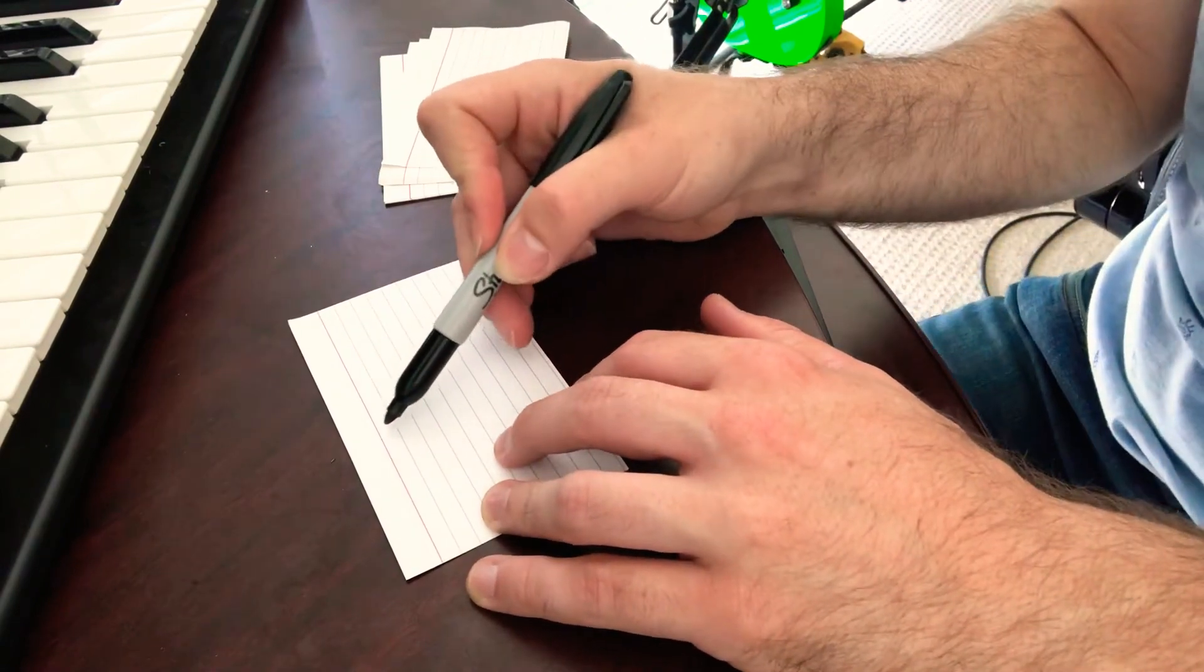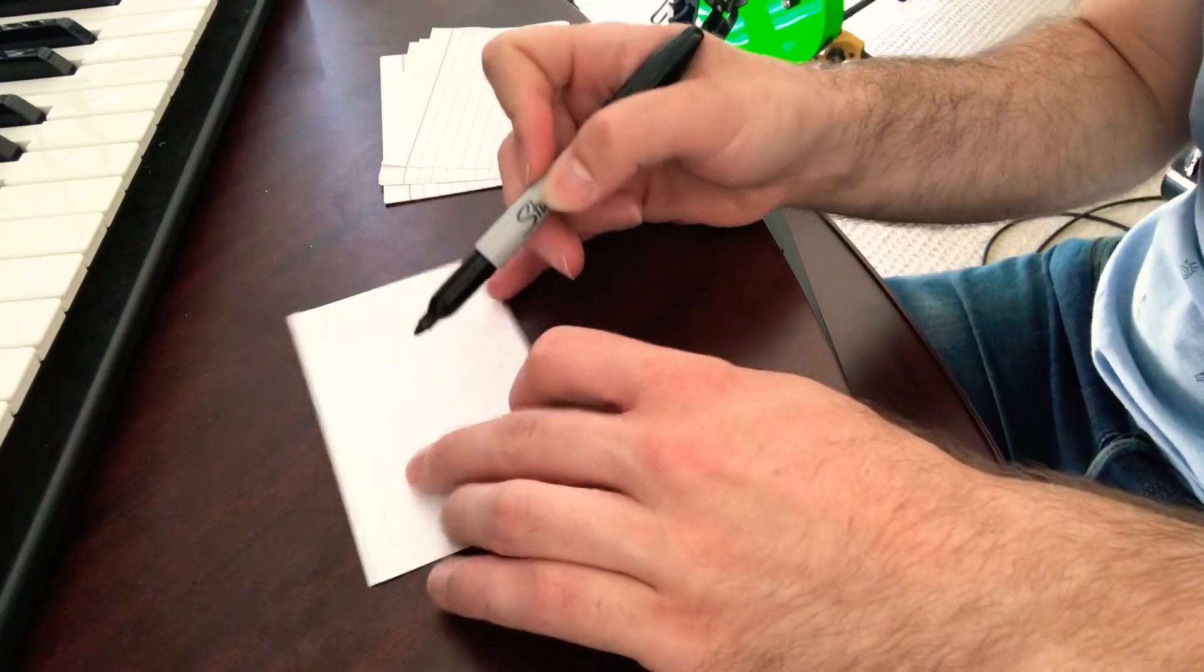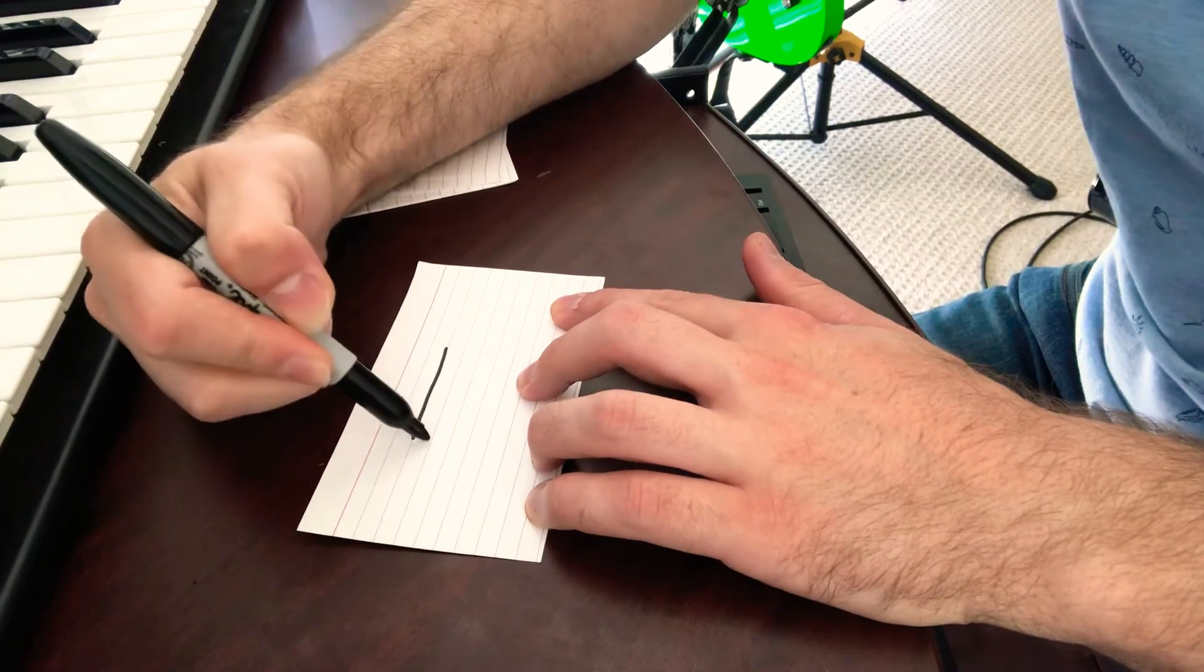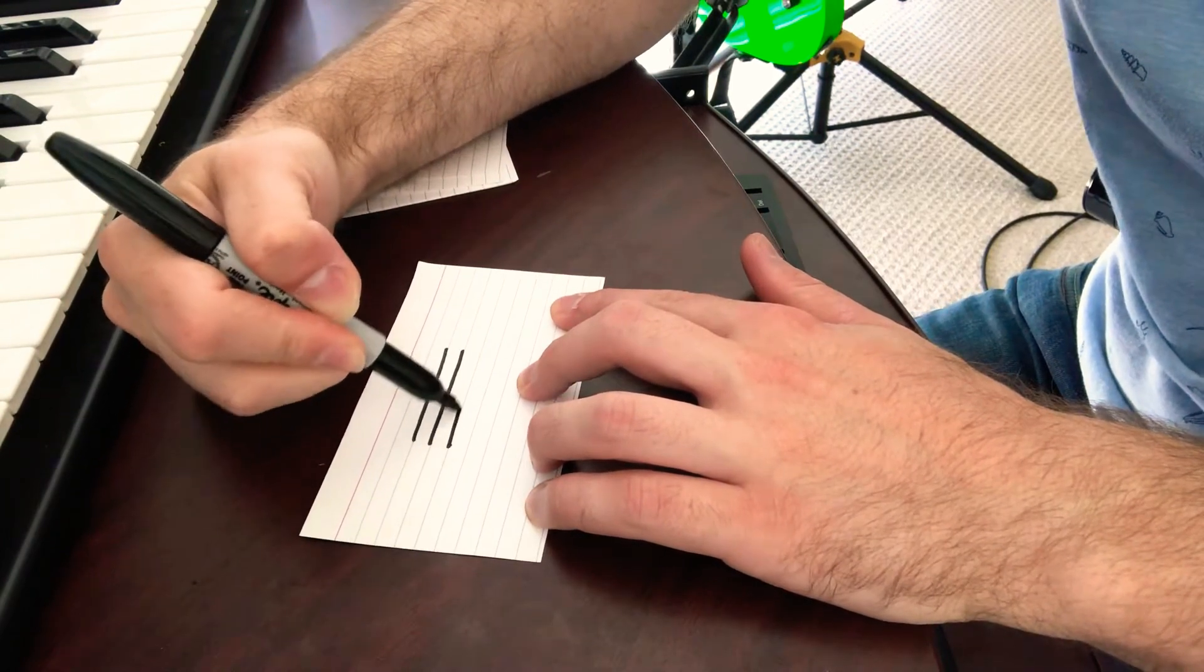So what you're going to do is just count a few lines down from the top line on your lined cue cards, and then you just start making five lines, just like this. Just do it in the middle.